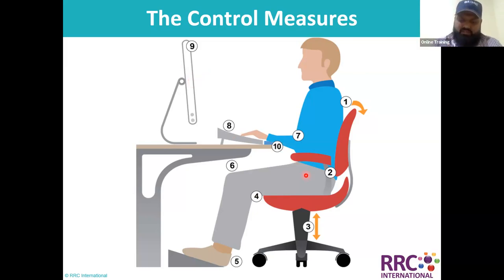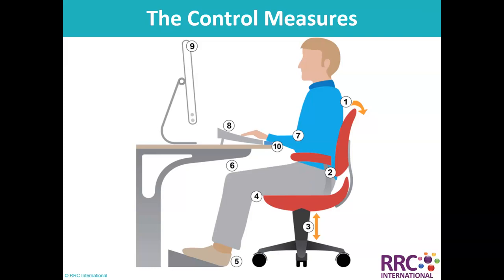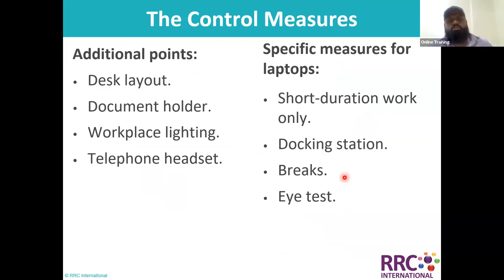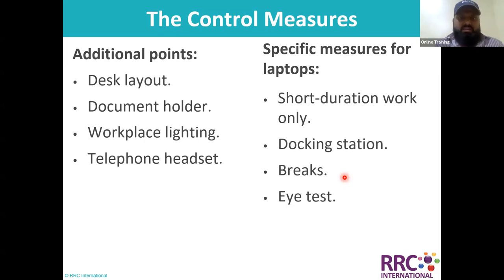Point ten is about where you rest your wrists. Additional points include: desk layout — straight or L-shaped so everything is in your access; document holder; workplace lighting; telephone headset. For laptops, use only for short duration and docking stations must be used. Breaks should be given and eye tests conducted to avoid strain.